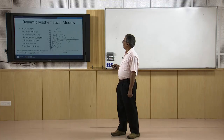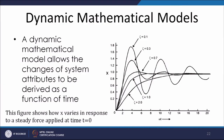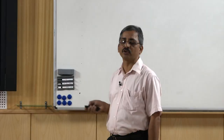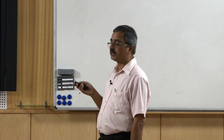Next are the dynamic mathematical models. These allow changes of system attributes to be derived as a function of time. A plot showing how x varies in response to a steady force applied at t = 0 for various damping ratios illustrates this — it shows for the simple spring-mass-damper system discussed earlier how the displacement of the mass varies with time for various damping ratios.